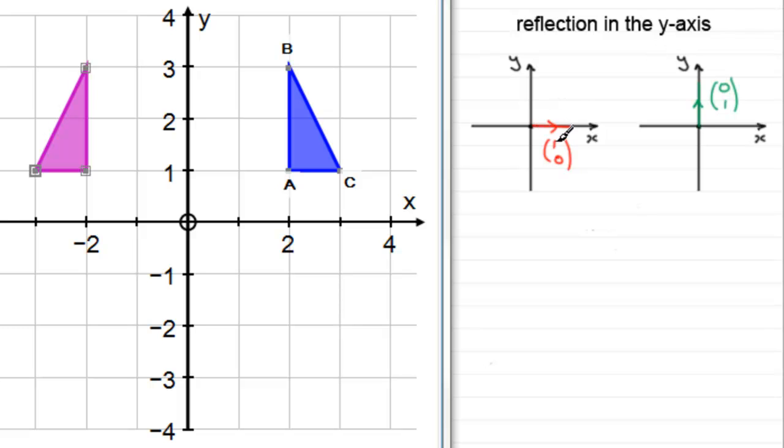So when we take the base vector (1,0), where would that go if we were to reflect it in the y-axis? Well, it would go out to the left here, and that vector would now be (-1,0). And where does this vector go? Well, it just stays on the y-axis; it's invariant. So (0,1) moves to (0,1).